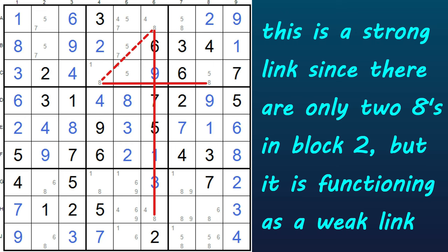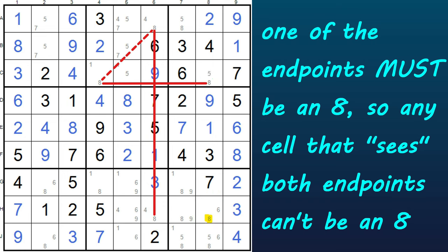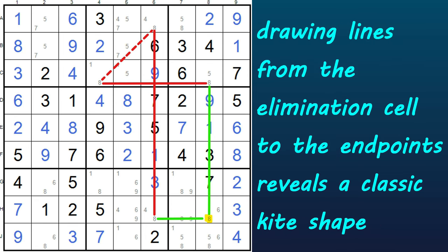In either case, the endpoints for the strings are here — these two 8s — and this cell sees both those endpoints, so the 8 in this cell can be eliminated. And in this example, that leaves a naked single, the 6, so that cell is solved. If I draw lines from the endpoints to that cell, you can see a clear shape of a kite.